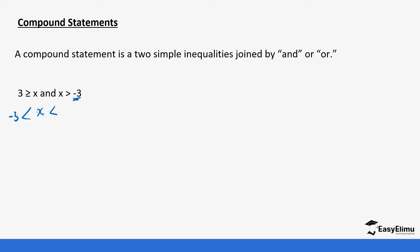Then x is less than or equal to 3, so we write 3 on the right side. The values of x will range from negative 3 to 3. We then draw that on a number line.